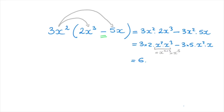So the first term becomes 6x to the power of 5, minus 3 times 5, which is 15, times x squared times x — that's just x cubed. So the final result is 6x to the fifth minus 15x cubed. And we're done — we've opened up this pair of parentheses using the distributive rule.